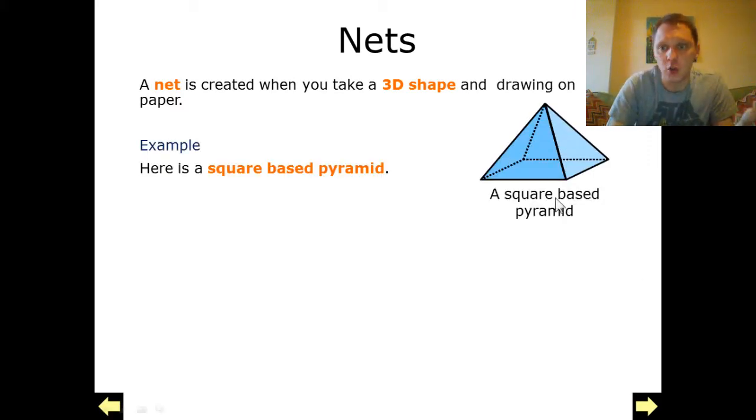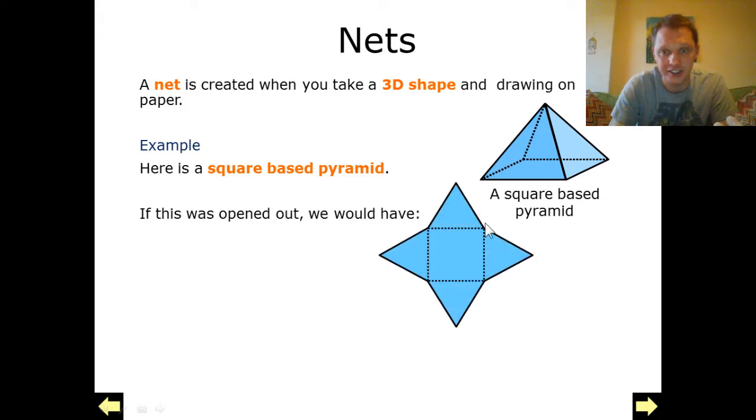So here I've got a square base pyramid, and if I was to open this pyramid up I'd have the square which is the square base, and I'd have four triangles on either end of this square which when they would all fold up they would actually produce this square base pyramid.